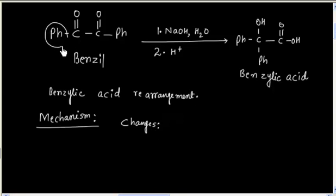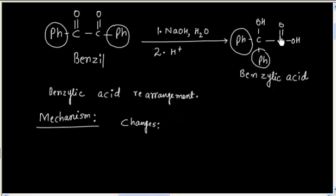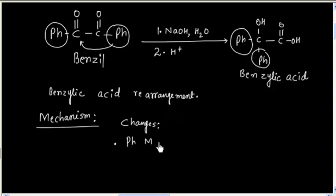Initially, this carbon has one phenyl group, but in the product it has two phenyl groups. This other carbon has one phenyl group, but in the product there is no phenyl group. So it seems this phenyl group has migrated to this carbon. So we can say, in this reaction, we have phenyl group migration.